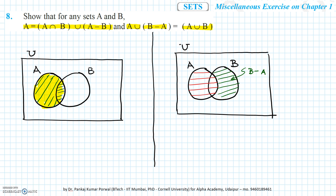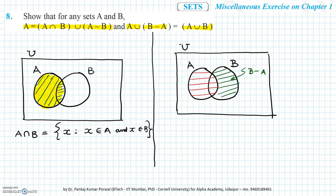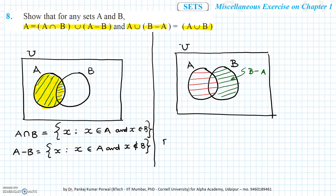Now we have to do this mathematically. Before proceeding, let's review the definitions: A intersection B is the set of all X such that X belongs to A and X belongs to B. A minus B is the set of all X such that X belongs to A and X does not belong to B. Similarly, B minus A is the set of all X such that X belongs to B and X does not belong to A.